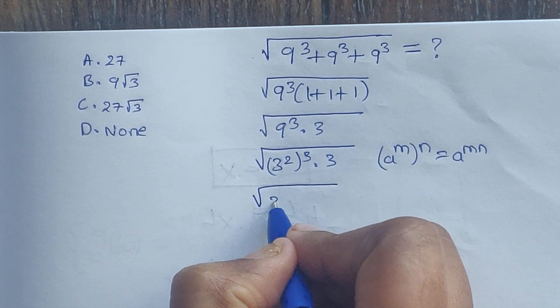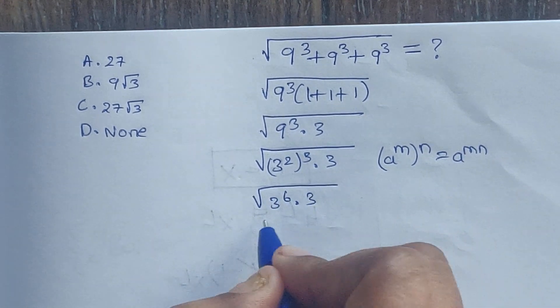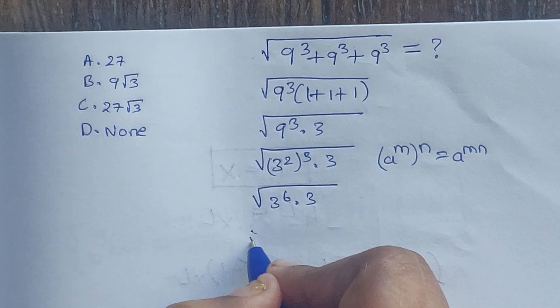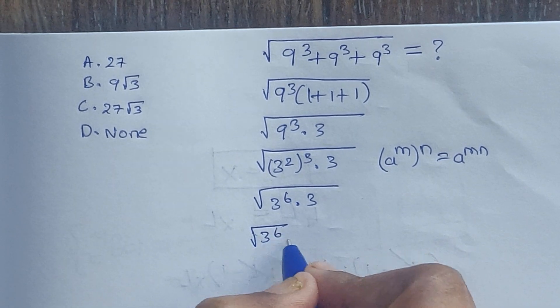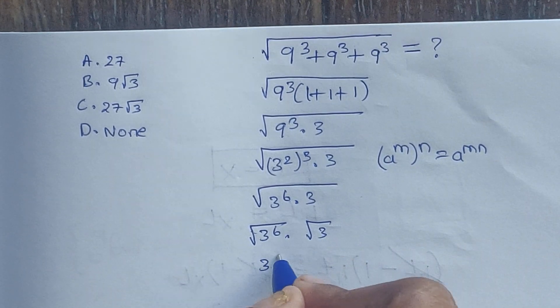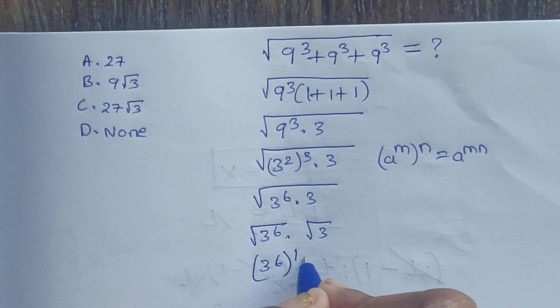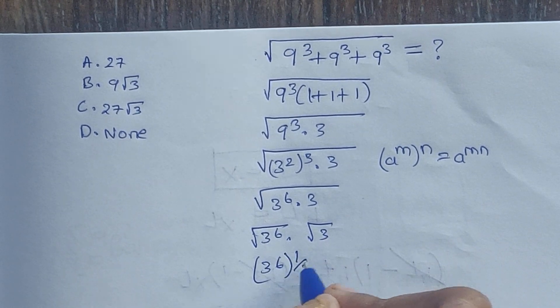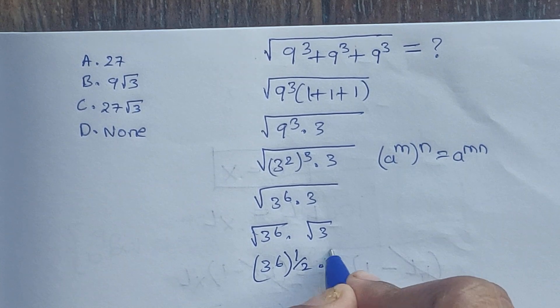So 2 times 3, 3 to the power of 6 times 3. So square root of 3 to the power of 6 times square root of 3. So 3 to the power of 6, whole to the power of 1 by 2, times square root of 3.